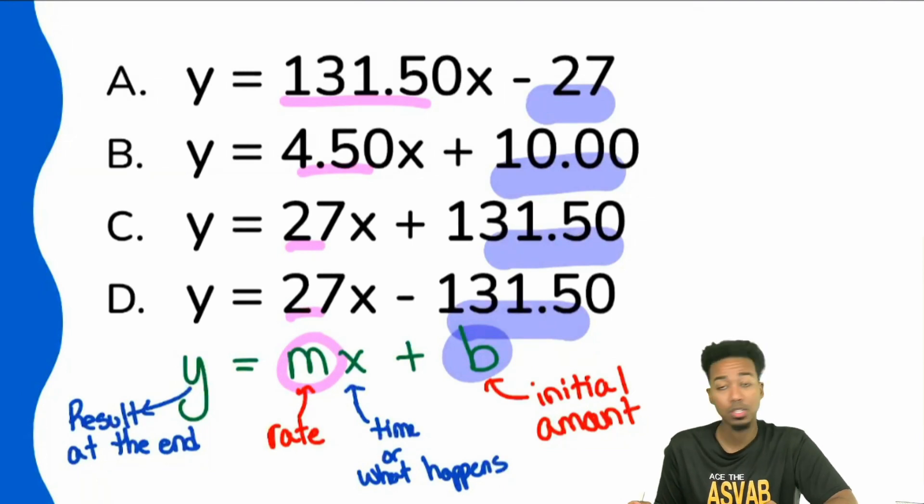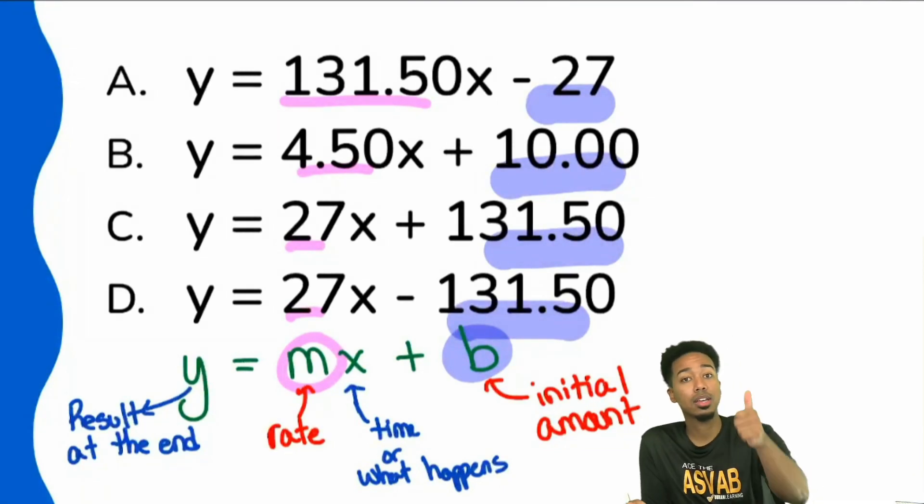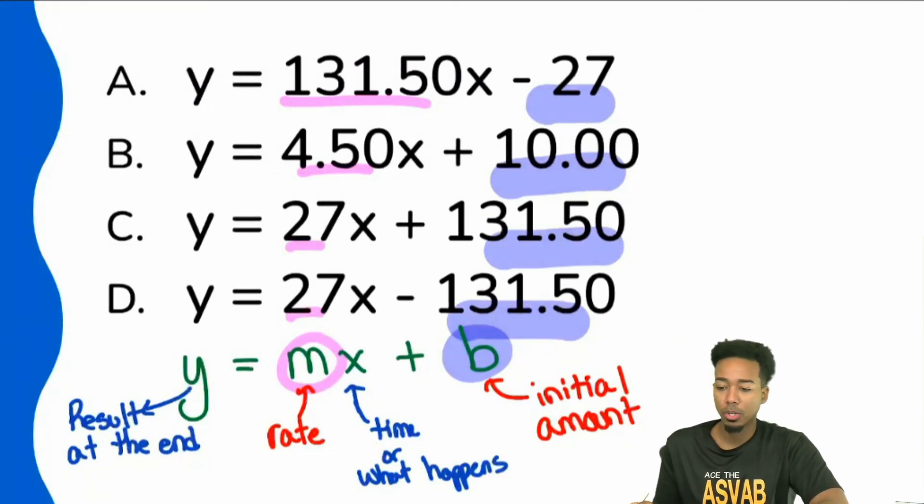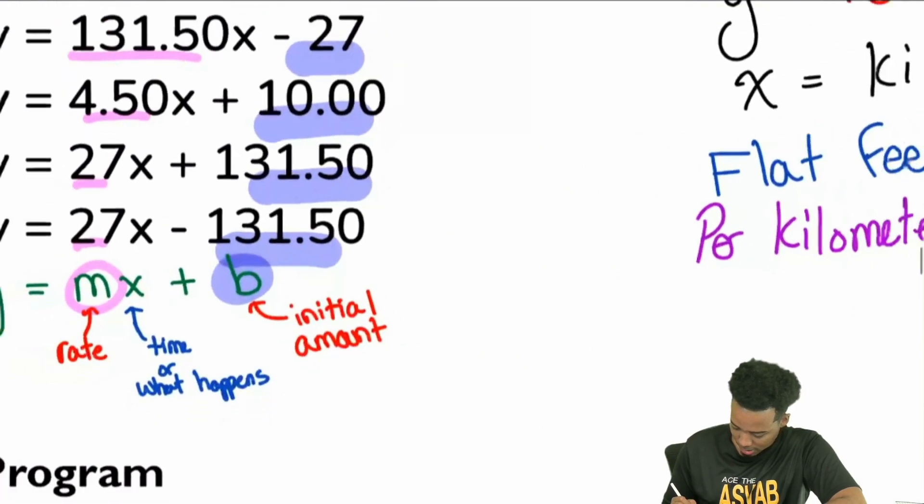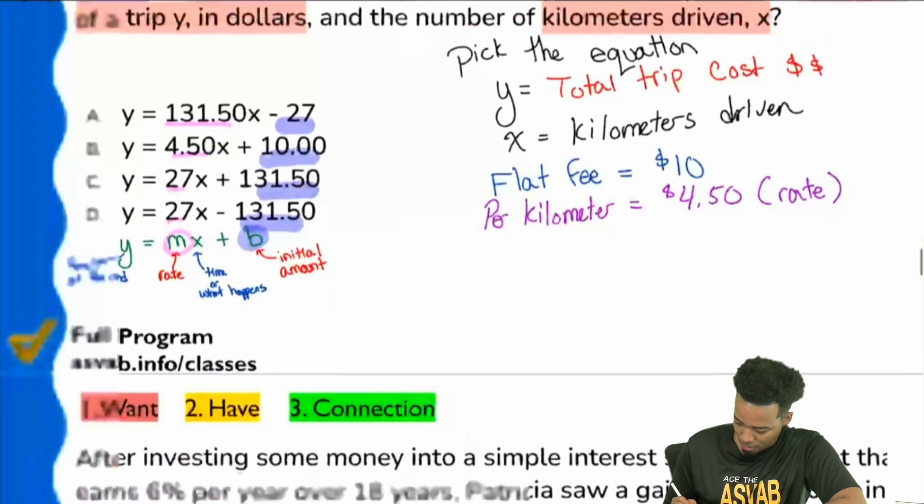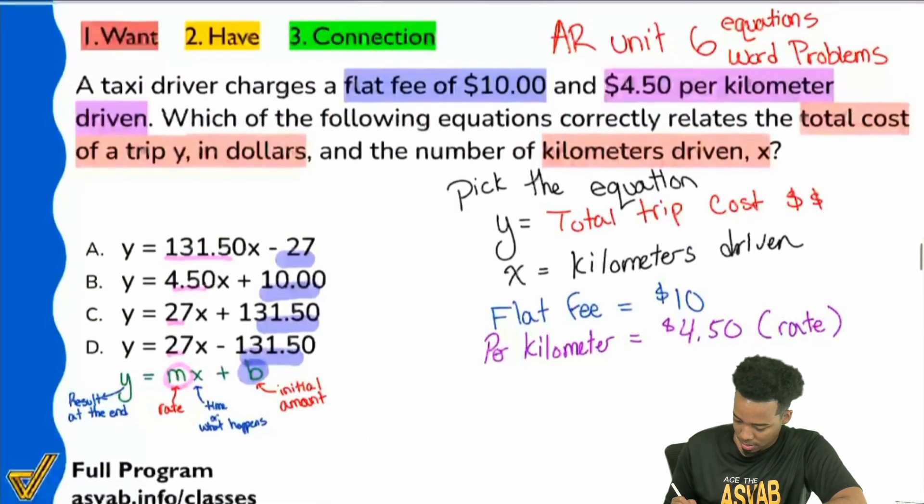Which ones are the ones that we want to find the values of? Yeah. M and B. Notice that M and B are the only ones here that we care about. M and B are the only ones we care about. So let's see what they are. Everyone, what did I say? M is your what? M is your rate. Sounds good. So M is your rate.